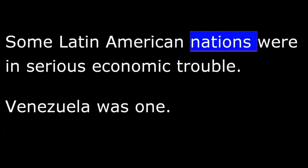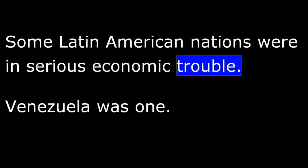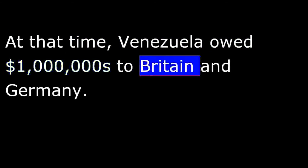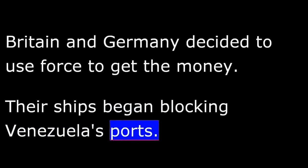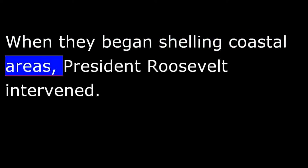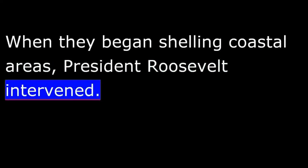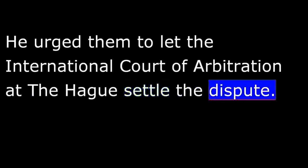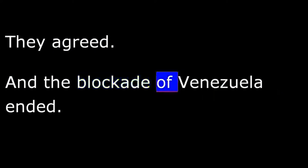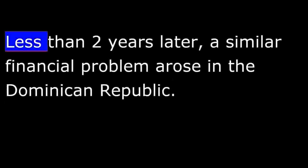Some Latin American nations were in serious economic trouble. Venezuela was one. At that time, Venezuela owed millions of dollars to Britain and Germany. The Venezuelan ruler refused to make payments on the loans. Britain and Germany decided to use force to get the money. Their ships began blocking Venezuela's ports. When they began shelling coastal areas, President Roosevelt intervened. He urged them to let the International Court of Arbitration at The Hague settle the dispute. They agreed, and the blockade of Venezuela ended.